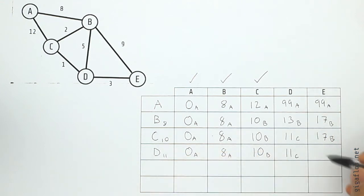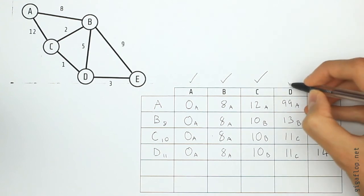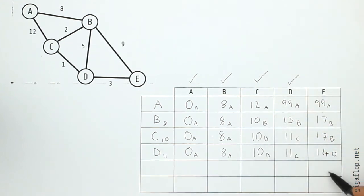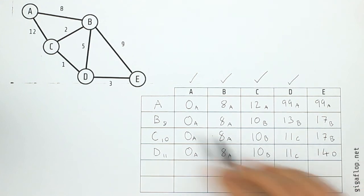D to E is currently seventeen, can we beat that? We've got eleven plus three, fourteen. So yes, D to E, we replace with fourteen from D. Now we've finished our inspection of D. So we've now reached E, which is our finished vertex, so we know that the shortest route from A to E has a length of fourteen.